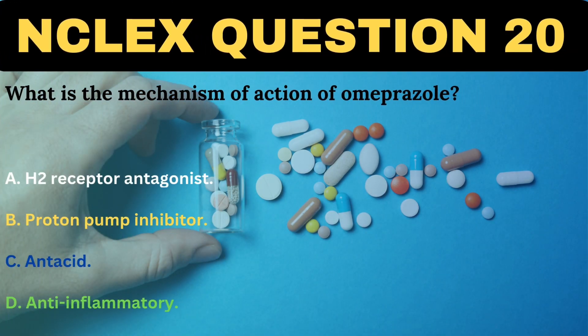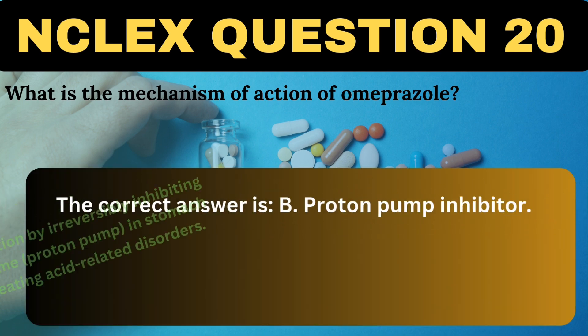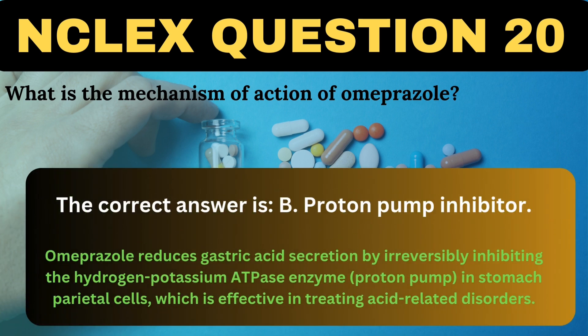What is the mechanism of action of omeprazole? A. H2 receptor antagonist. B. A proton pump inhibitor. C. Antacid. D. Anti-inflammatory. The correct answer is B, a proton pump inhibitor. Omeprazole reduces gastric acid secretion by irreversibly inhibiting the hydrogen-potassium ATPase enzyme, the proton pump, in stomach parietal cells, which is effective in treating acid-related disorders.